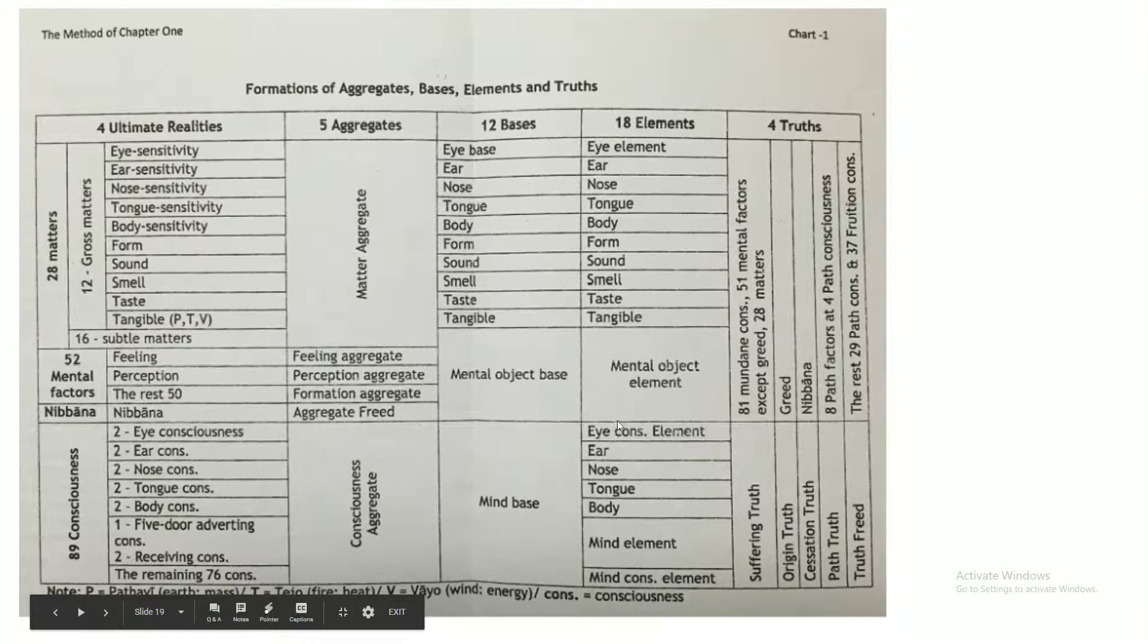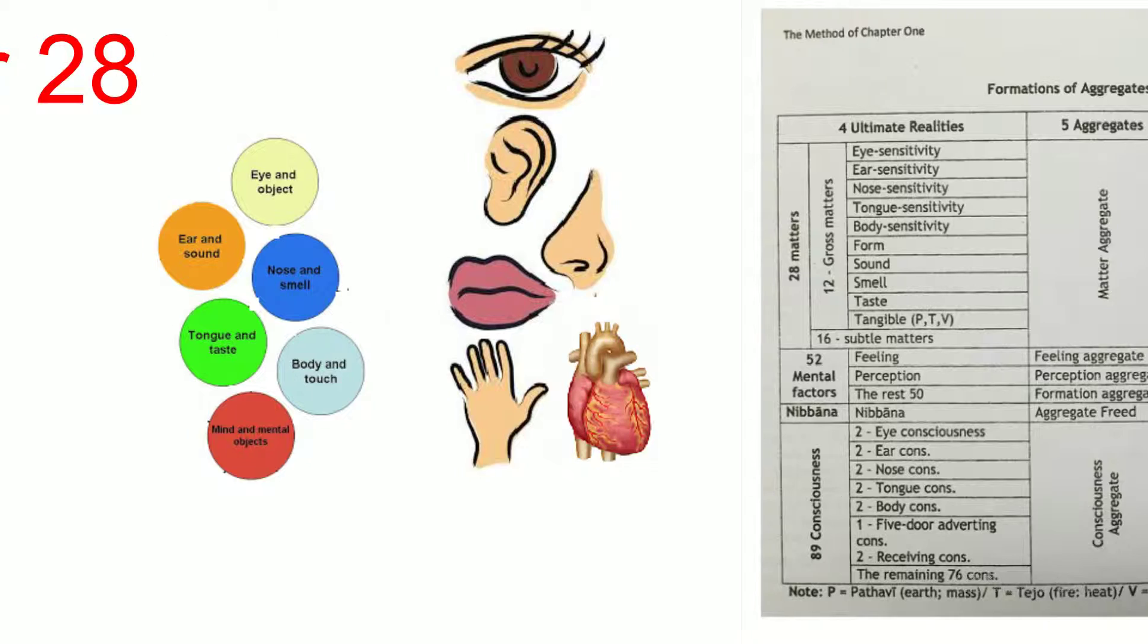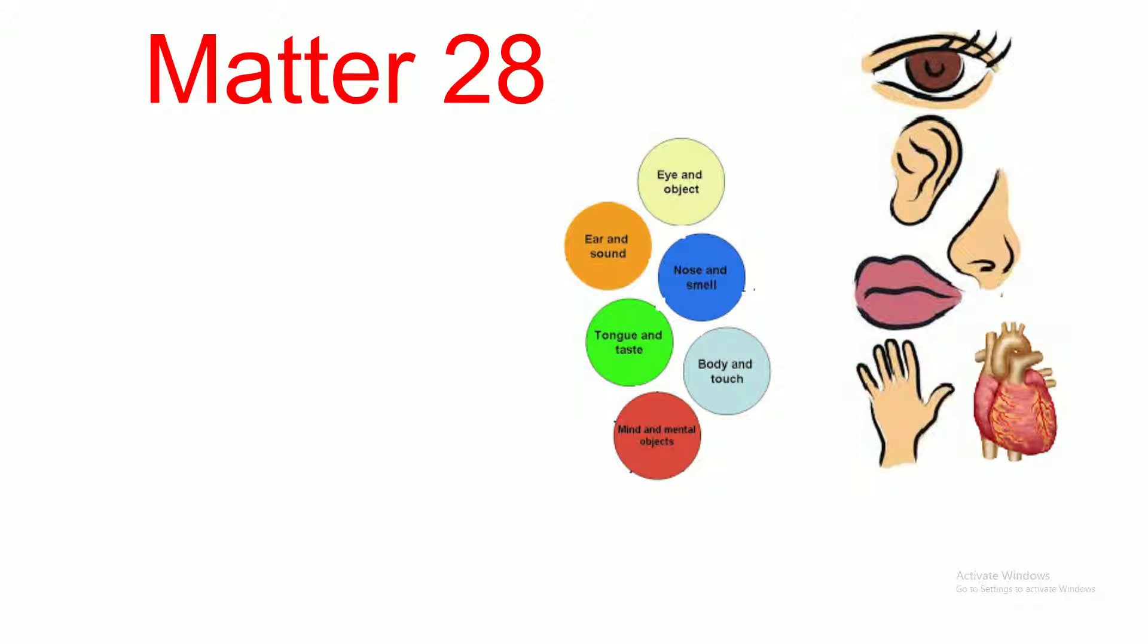So this chart, we have to know by heart. We will explain to you slowly, slowly, and at the end of the lecture, you will know by heart. So there are quick explanations about matter, 28 matters. There's a sixth sense door: eye door, ear door, nose door, tongue door, body door, and then mind door. So eye has contact with the visible object. Ear is for sound, nose is for smell, tongue is for taste, body is for touch, and then mind is for mental objects.